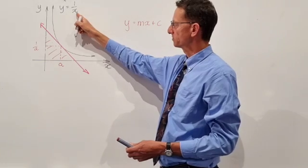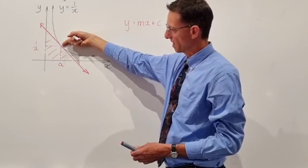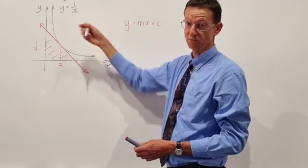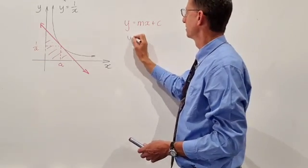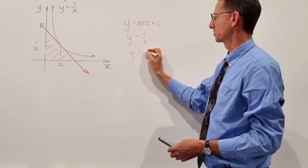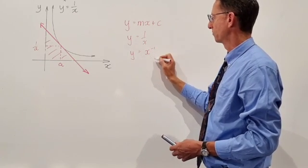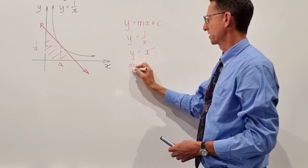So let's go to the reciprocal function first of all because if we differentiate it we can find the gradient at that point where the tangent meets the reciprocal function. So the easiest thing to do with that reciprocal function is express it with the x off the denominator, express it now as x to the negative 1 and then when we differentiate that function.